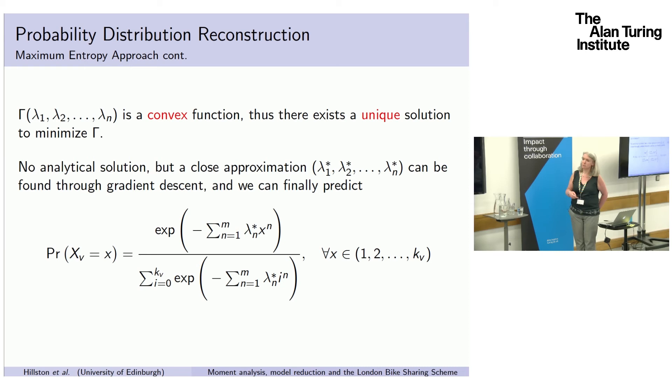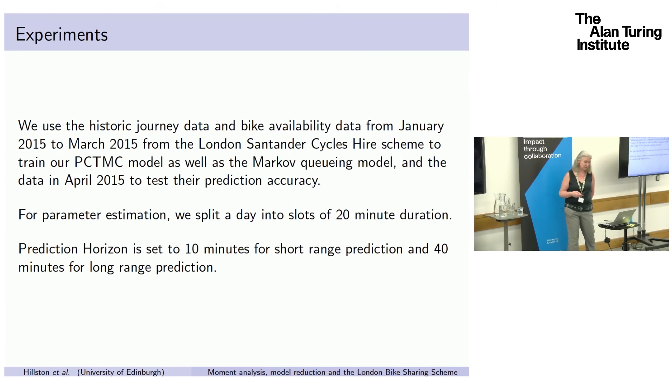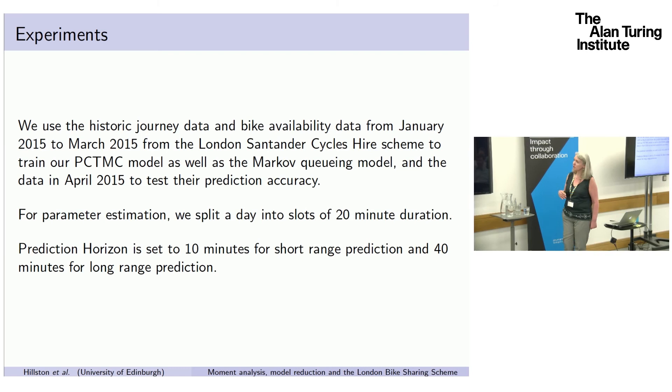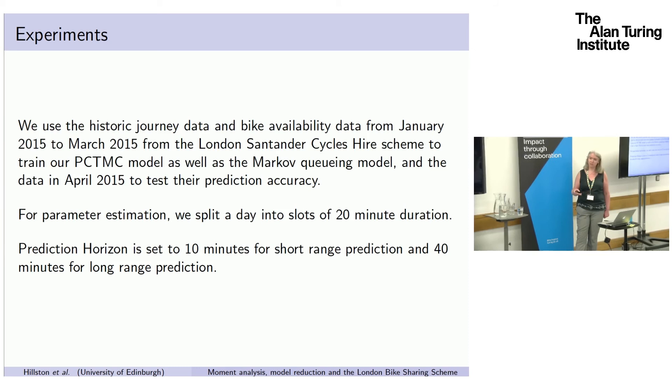What we did was we collected the historic journey data which is published by Transport for London. We had the set which was from January to April and we split that so that we had January to March and we used that to set the parameters of our model and then we tested the prediction accuracy for the data for April 2015. We split the day into 20 minute durations. So we have this set of models really to represent the time inhomogeneity and our predictions were done with horizons of 10 minutes and 40 minutes. So 10 minutes within one time slot, usually 40 minutes being up to three.